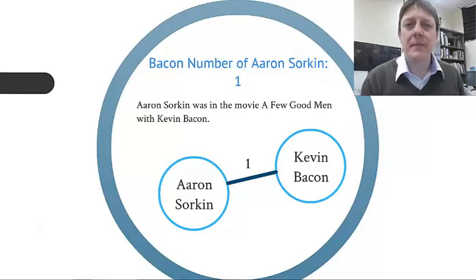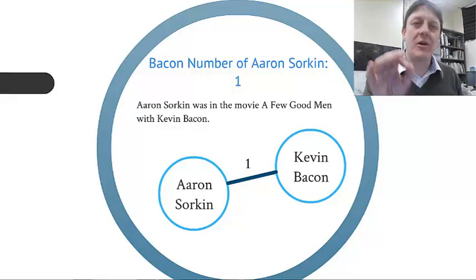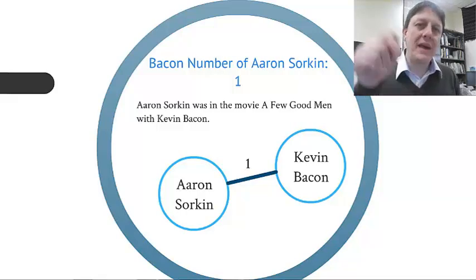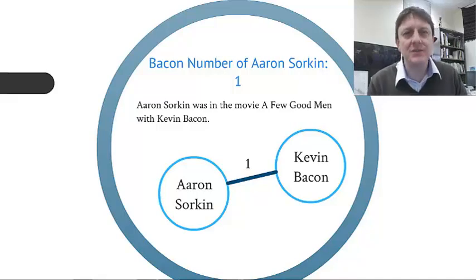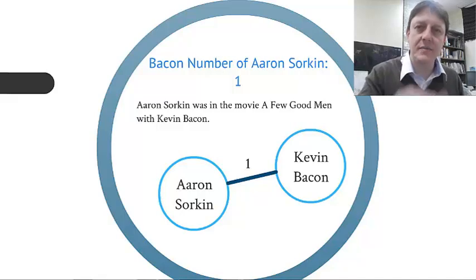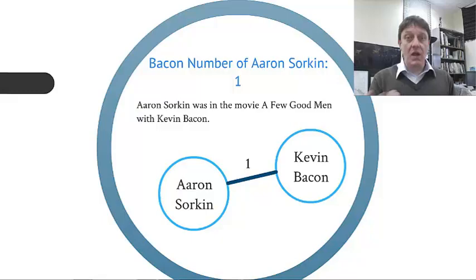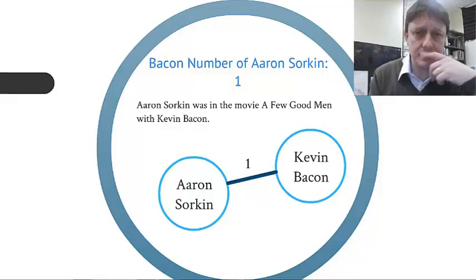Here's one person with a Bacon number of one: Aaron Sorkin. Aaron Sorkin was in the movie A Few Good Men with Kevin Bacon — not simply as the writer, but also as an actor, actually in the movie. He played a man in a bar, an extra, granted, but nevertheless directly tied to Kevin Bacon through the tie 'has been in a movie with.' That's a network distance of one — one intervening tie between the two.